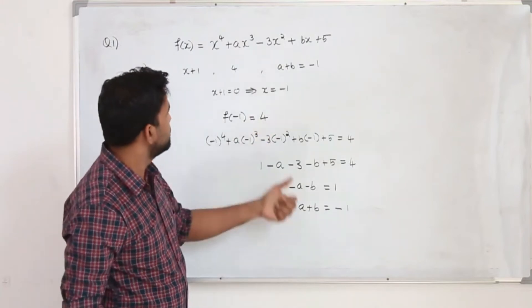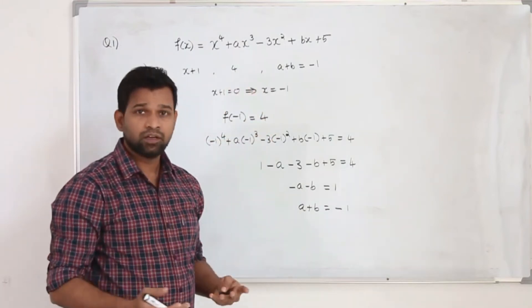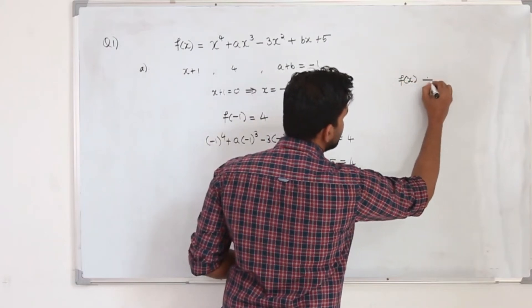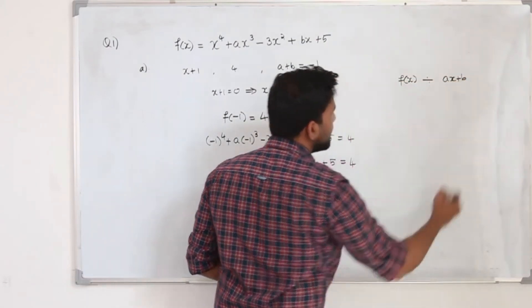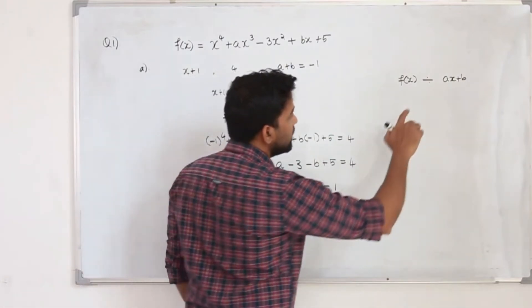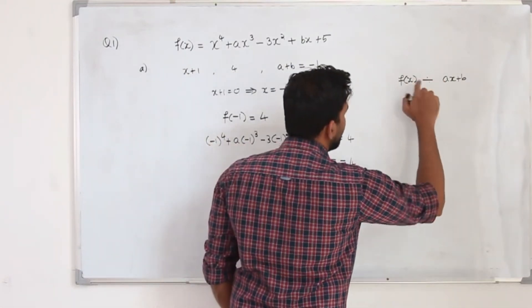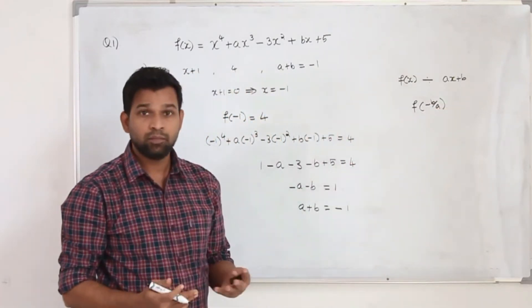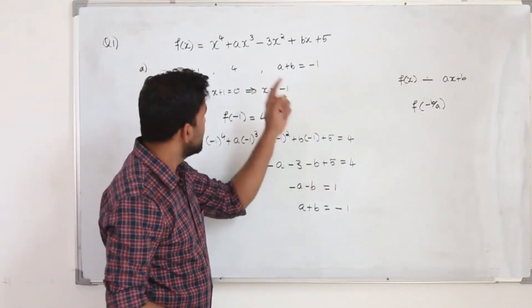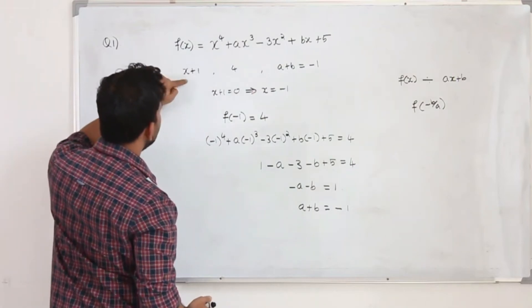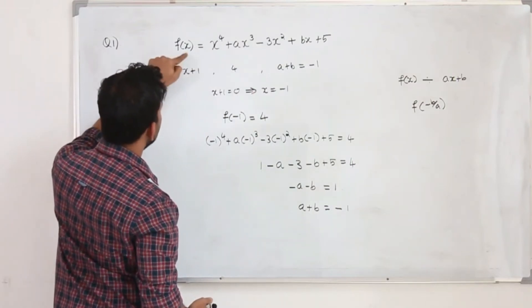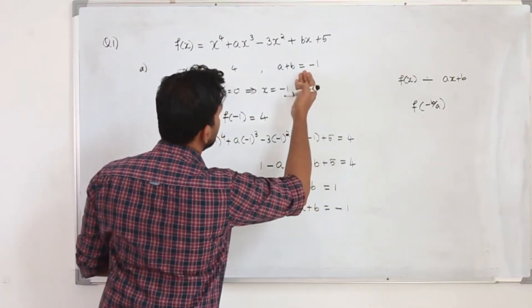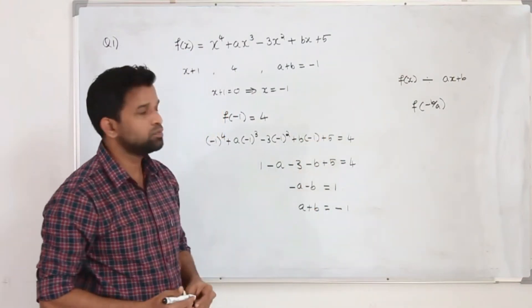That's our part A. That's it, very simple. You need to know the remainder theorem. The remainder theorem says, when the function f of x is divided by ax plus b, a linear factor ax plus b, then the remainder of f of x will be f of minus b upon a. That's our remainder theorem. So use the theorem here, if it is divided by x plus 1, replace x by minus 1, so you will get the remainder 4. So use that information to attain this equation, a plus b equals minus 1.